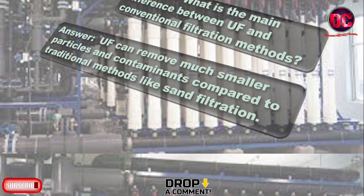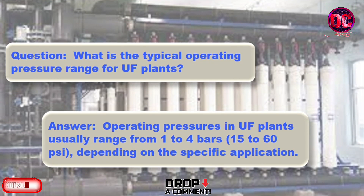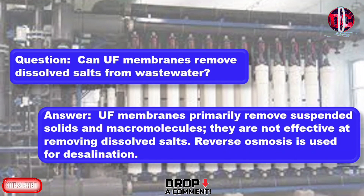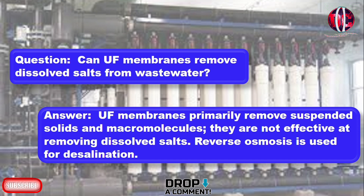What is the typical operating pressure range for UF plants? Operating pressures in UF plants usually range from 1 to 4 bars (15 to 60 psi), depending on the specific application. Can UF membranes remove dissolved salts from wastewater? UF membranes primarily remove suspended solids and macromolecules. They are not effective at removing dissolved salts.